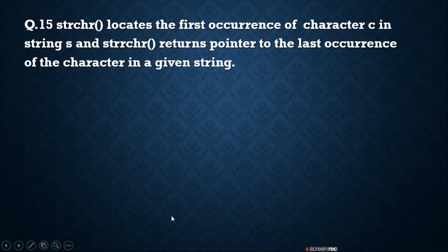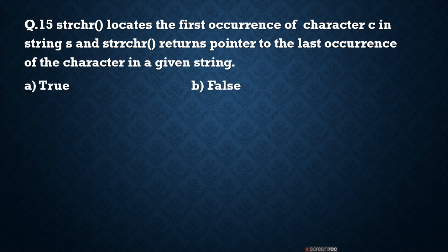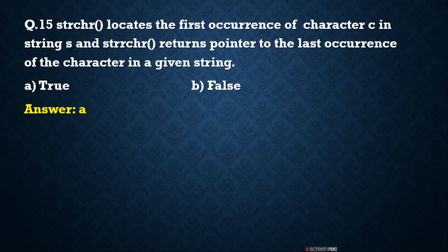strchr function locates the first occurrence of character C in string S. And strrchr returns a pointer to the last occurrence of the character in a given string. True or false? The correct answer is A, true. Read all questions carefully because in your exam there may be two questions based on this — strchr gives you the first occurrence and strrchr gives you the last occurrence of the character in a given string.